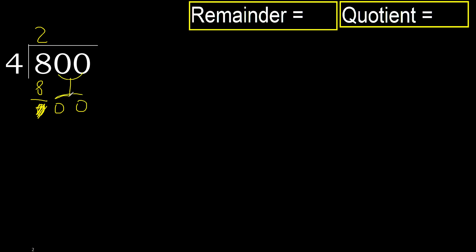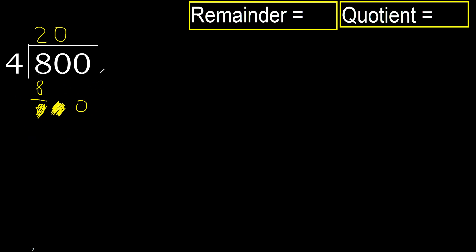2 numbers, therefore complete — always complete with 0. Eliminate the 0 on this side. 0 is less, therefore next.